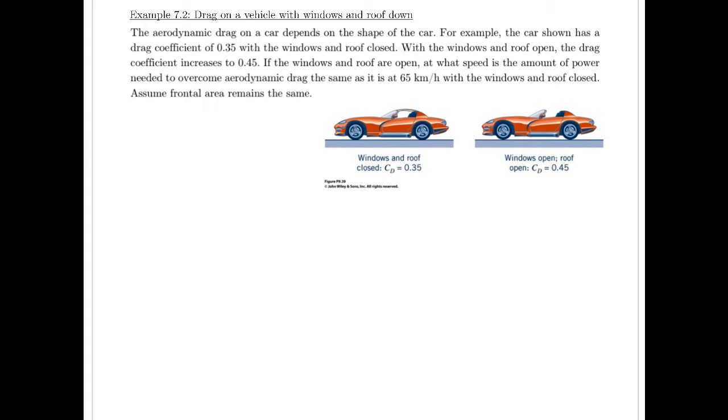So the aerodynamic drag on a car depends on the shape of the car. For example, the car shown has a drag coefficient of 0.35 when the windows and the roof are closed. But when the windows and the roof are open, the drag coefficient increases to 0.45. That's not unexpected because you're disturbing the airflow and causing more drag. If we've sat in a convertible you can really feel that, especially if you're in the back seat.